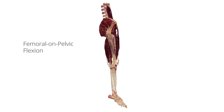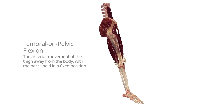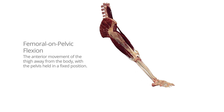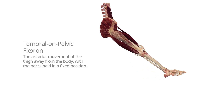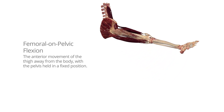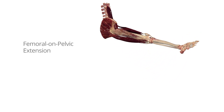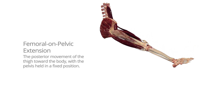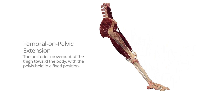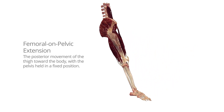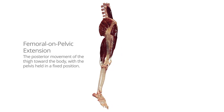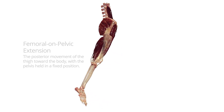Femoral on pelvic flexion is the anterior movement of the thigh away from the body, with the pelvis held in a fixed position. Femoral on pelvic extension is the posterior movement of the thigh toward the body, with the pelvis held in a fixed position.